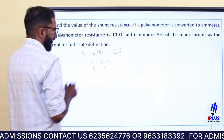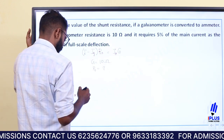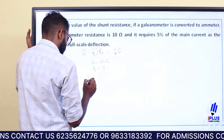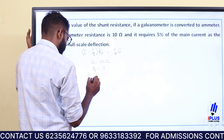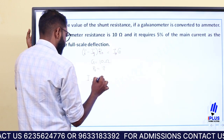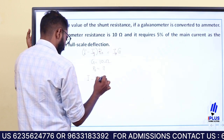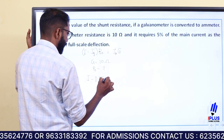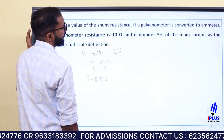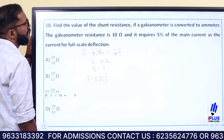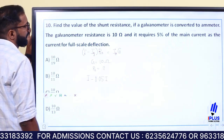Rs is to be found. ig is equal to 0.05i. Substituting, we have i minus 0.05i into Rs equals 0.05i, and the value of ig is 0.05i.